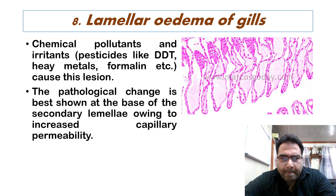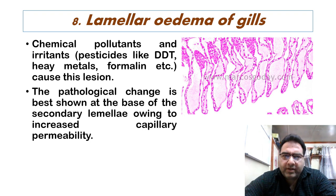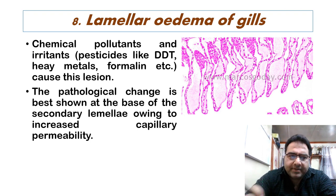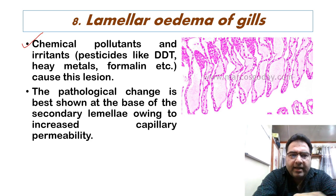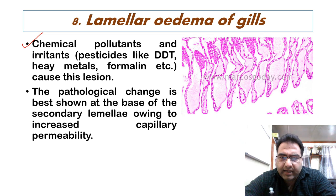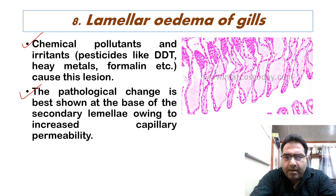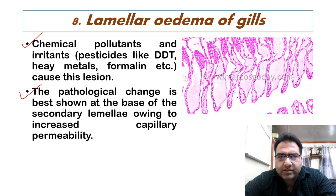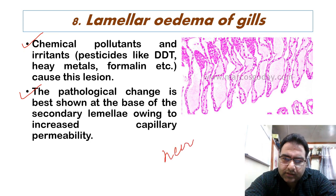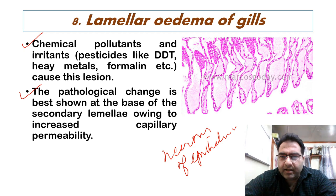Then we have lamellar edema of the gills. In this case there is excessive edematous separation of the gill epithelial lining, followed by cellular necrosis in the epithelium. Chemical pollutants and irritants such as pesticides, DDT, heavy metals, and formalin cause these lesions. The pathological change is best shown at the base of the secondary lamella owing to increased capillary permeability, leading to extensive edematous separation of the gill epithelial lining and ultimately necrosis of the epithelium.